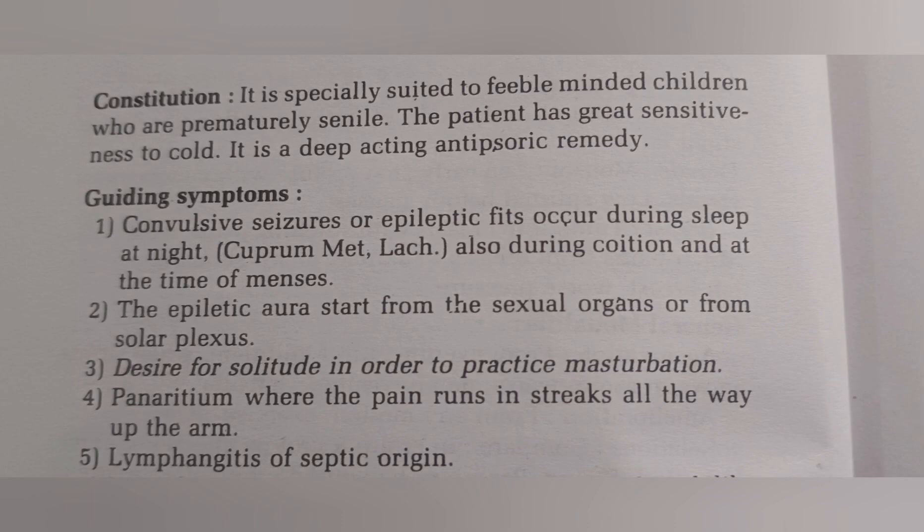The epileptic aura starts from the sexual organs or from the solar plexus. Yaani epilepsy ki jo shuruwat hai, voh sexual organs se hoti hai Bufo mein, ya fir solar plexus se. Solar plexus yaani celiac plexus ko solar plexus kehate hain, jo abdomen mein paaya jaata hai diaphragm ke paas — nerves aur ganglion ka ek group hota hai wahan.